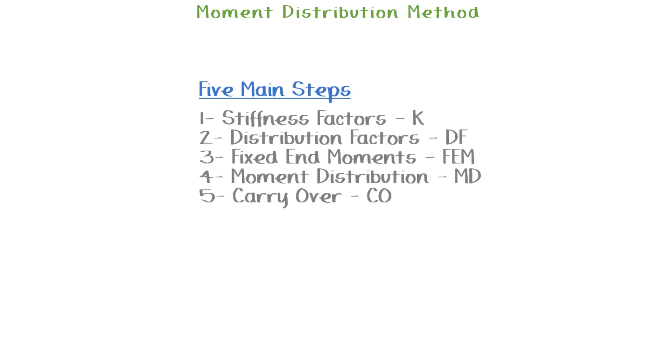Fourth step is to distribute the moments. The fifth step is to carry over the moments. We're going to go over each one of the steps in order to make it more clear. A sixth step would be to repeat steps four and five until the moments are small and not significant.